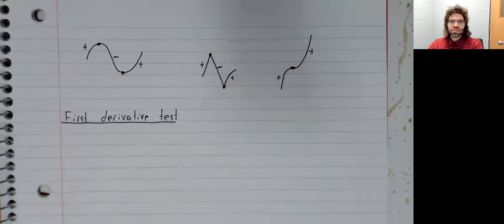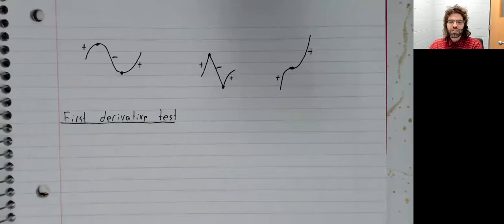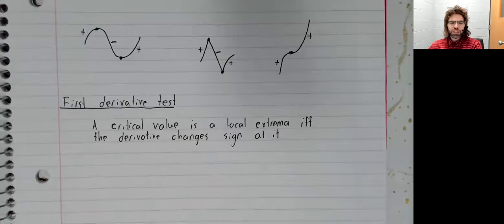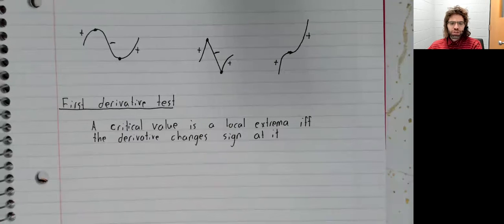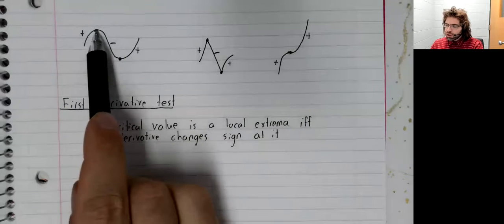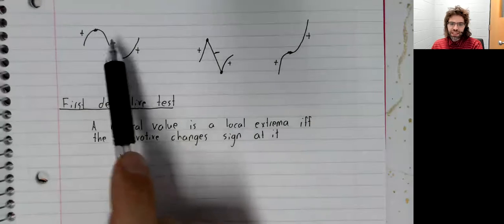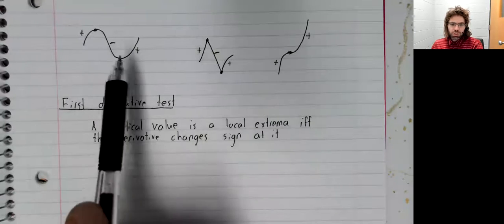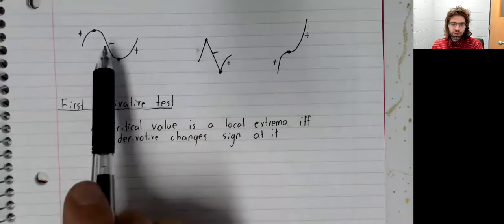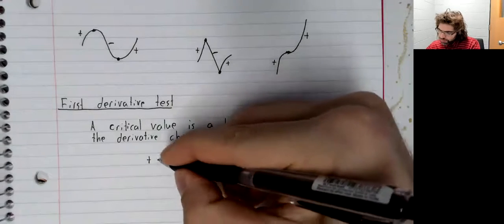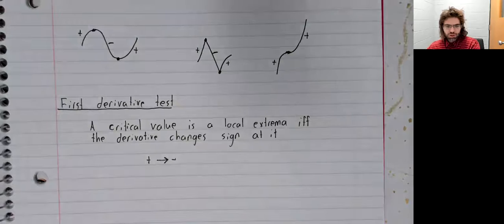This is an example of the first derivative test. A critical value is a local extrema if and only if the derivative changes sign at it. And we can do better than that. Notice that at both local maxima, the derivative goes from positive to negative. At both local minima, the derivative goes from negative to positive. And that is part of the first derivative test.